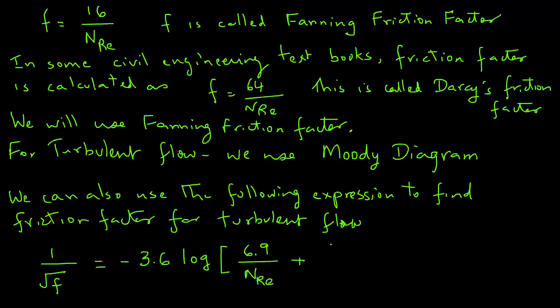That equals minus 3.6 times log in the parentheses. We have 6.9 divided by Reynolds number plus epsilon over D divided by 3.7, parentheses, raised to power 1.11, end of parentheses. So if you have a calculator, or you can program this in your spreadsheet, and you can find out friction factor for various values of epsilon over D and Reynolds number.